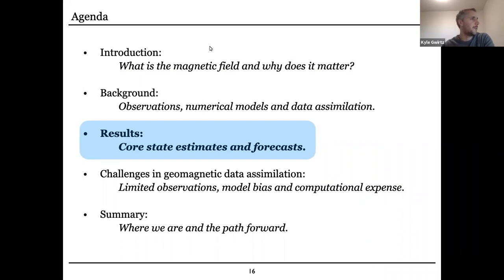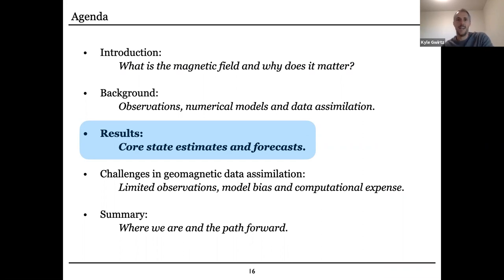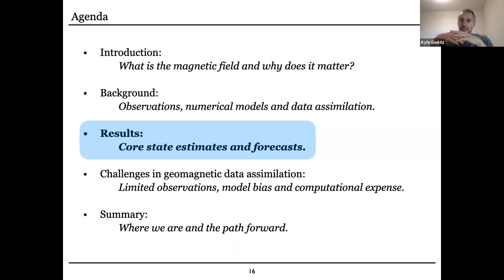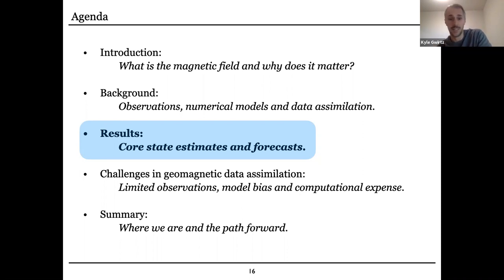Hopefully we've gotten everybody on board with the setup of the problem and the necessary background, and now we can get to the payoff here. We'll look at some actual attempts to estimate the state. Remember what we're doing: you're looking at observations of the magnetic field and trying to estimate the state of the outer core of the planet — the fluid flow and the magnetic field in the deep interior — and use that to make forecasts on decadal scales.